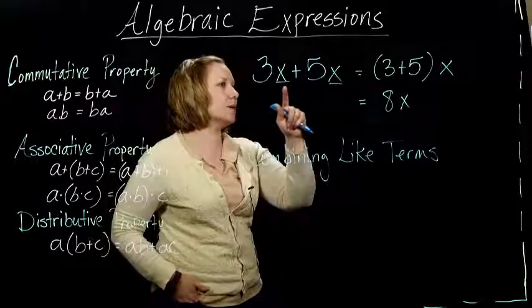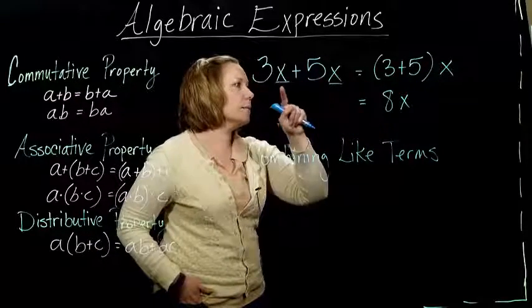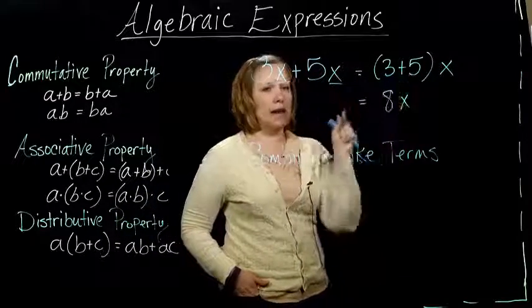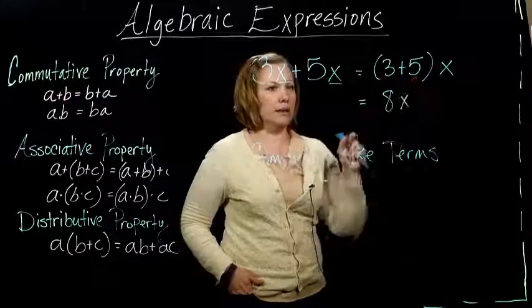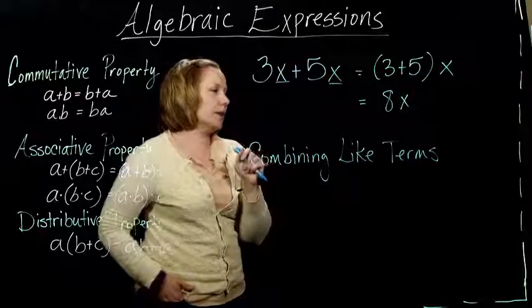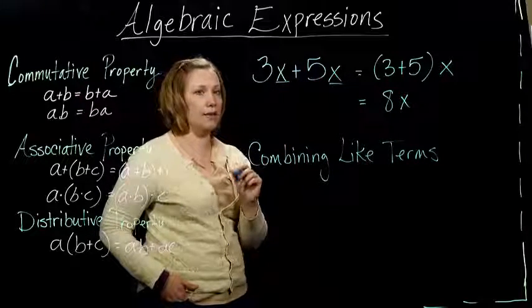The reason why they need to be like is because in order to use that distributive property, the variable part has to be the same. That way, when we rewrite it, we only have the number parts in the parentheses and we can add them together. For like terms, the numbers can be different, but the variable part - everything about it - has to be the same.